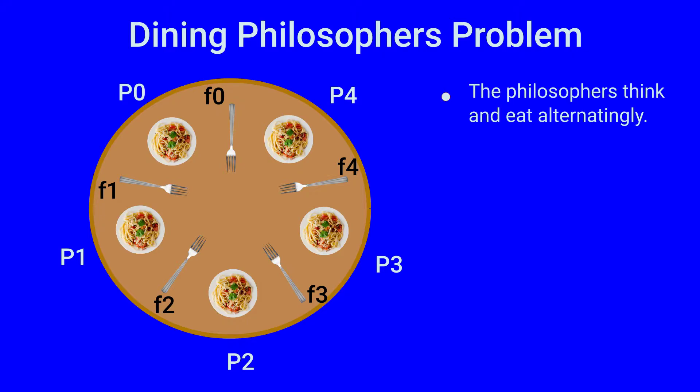The philosophers do two things, one at a time: they think and they eat alternatingly for small finite durations of time. Thinking is no problem, but for eating spaghetti, a philosopher needs two forks kept on the two sides of his or her plate. After eating, a philosopher puts the forks in their original place.